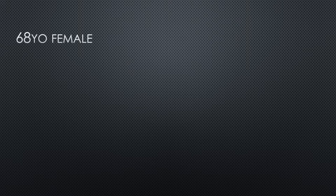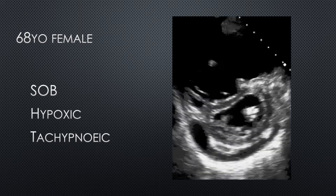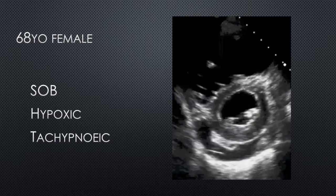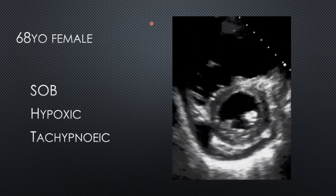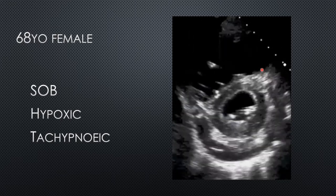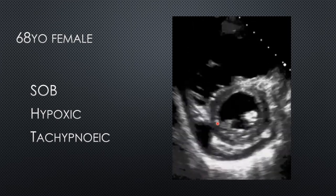Let's start with a case. It's 2 a.m., and one of your junior doctors comes to you for advice. He's just seen a 68-year-old female who's presented with shortness of breath, hypoxia, and tachypnea. He's recently done an ultrasound course, and he's managed to get this view, and he wants your opinion. This is a parasternal short axis. This is the right ventricle, and this is the left ventricle. So what do you think?